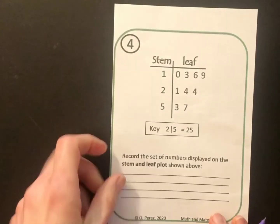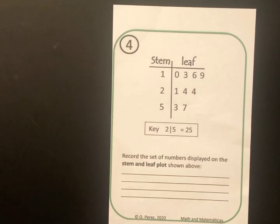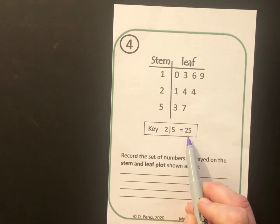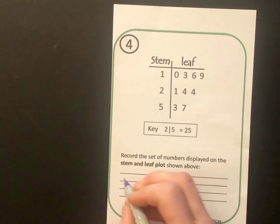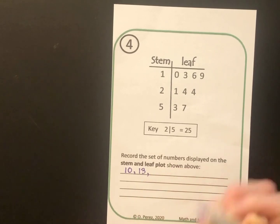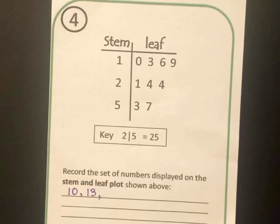On to number 4. We'll start number 4 together and then you'll finish it on your own. First and foremost, we need to look at the key so we can interpret the stem and leaf plot. According to the key, 2 line 5 is 25. Now that I know what the stem and leaf mean, I can go ahead and start listing the numbers. Let's do the first row together. The stem of 1 means 10. So the stem of 1 leaf of 0 is 10. The stem of 1 leaf of 3 is 13. Now you're on your own. You can finish the stem of 1 and then go on and do all the numbers in stem 2 and 5.